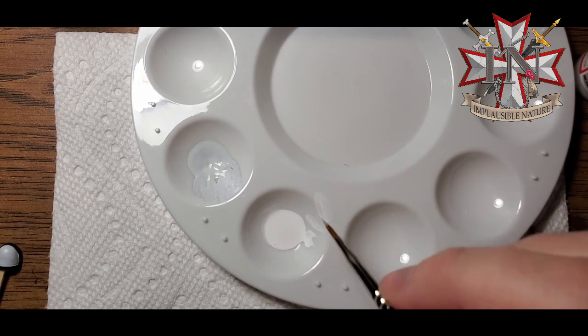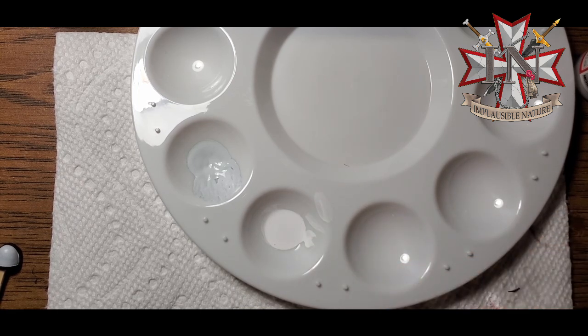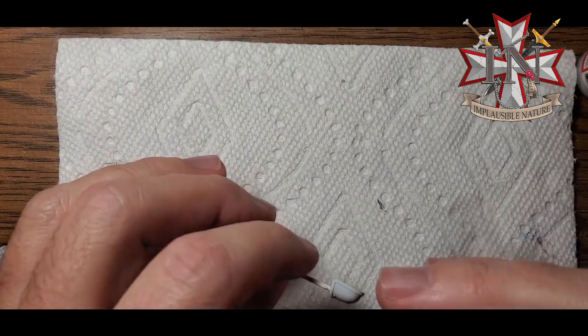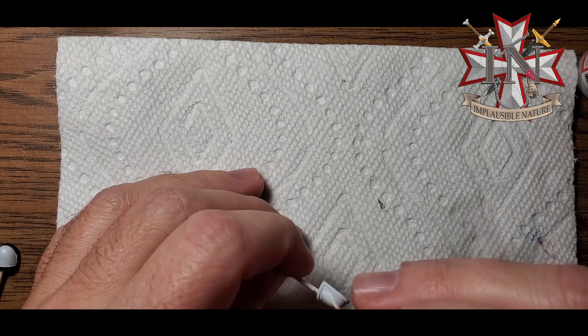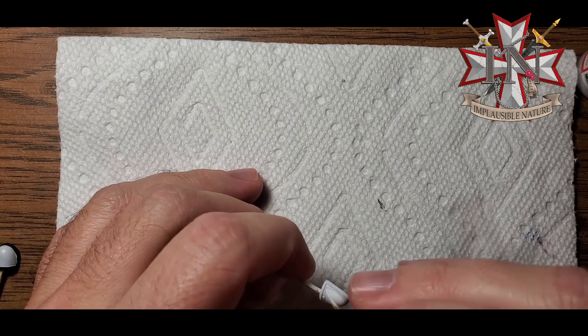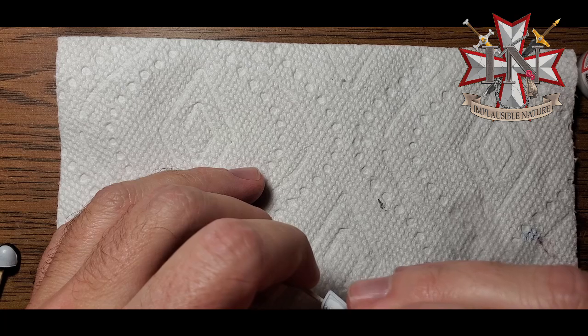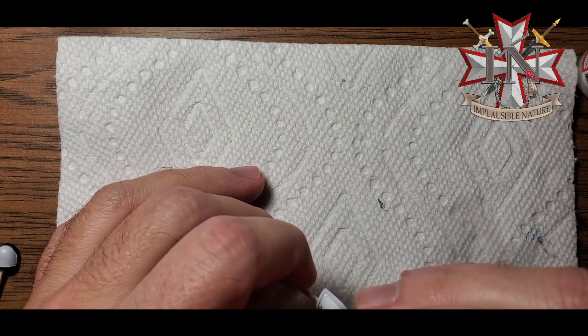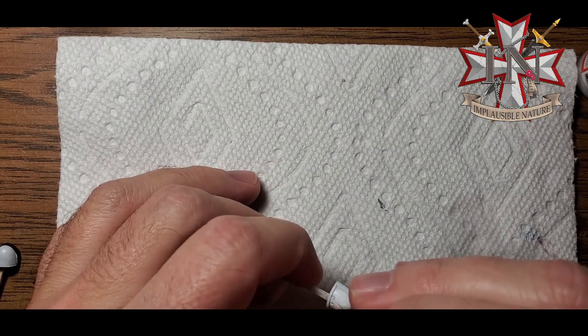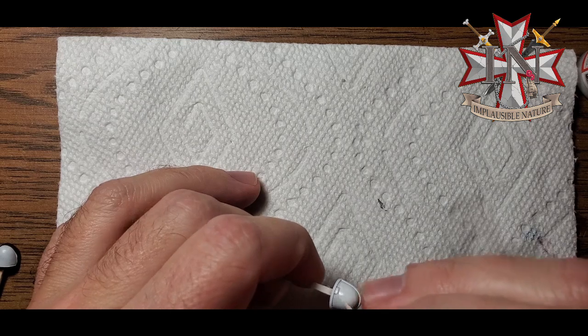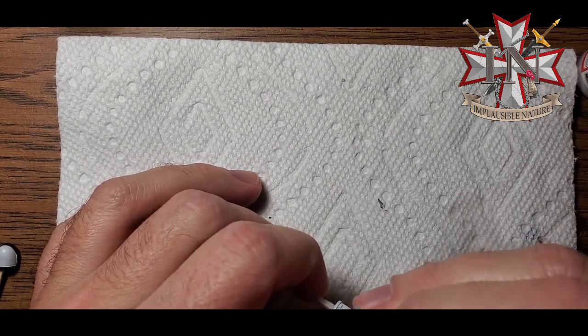This is important for getting that nice, smooth finish. If you're in doubt, a little thinner is better than a little thicker. When we paint this, we're going to leave the corners the Ulthuan Grey, or the Ghost Gray in this situation. It doesn't have to be a perfect, precise line. We're going to leave just a little bit of that showing. I'm going to paint nice and smooth, thin coats.